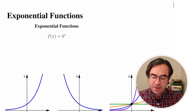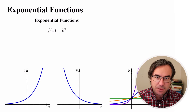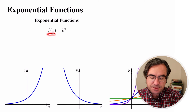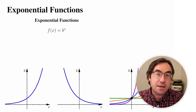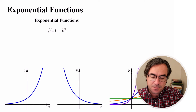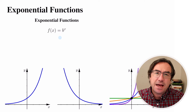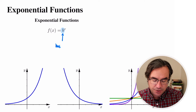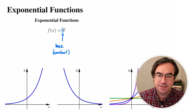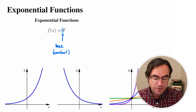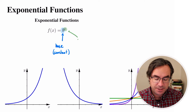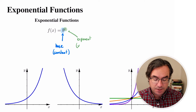Let's start with the formula. I'm going to introduce a little bit of terminology. The general formula for an exponential function is going to be some constant b raised to the power x. This constant b, we call this the base term of our exponential, and it's a constant. Where our variable is, that's in the exponent position — that's why it gets its name.